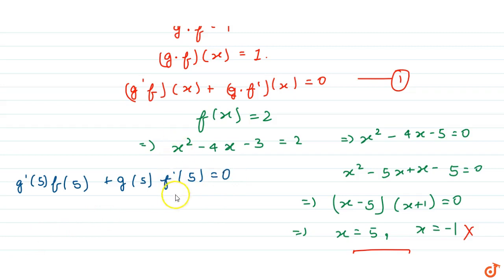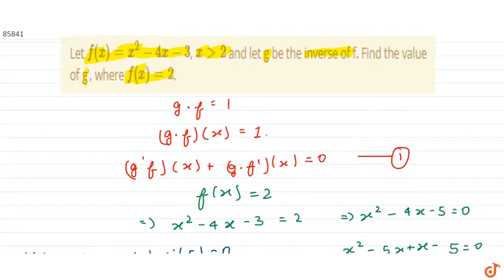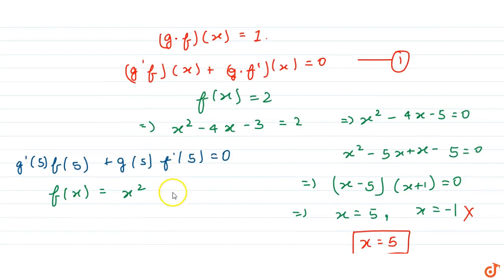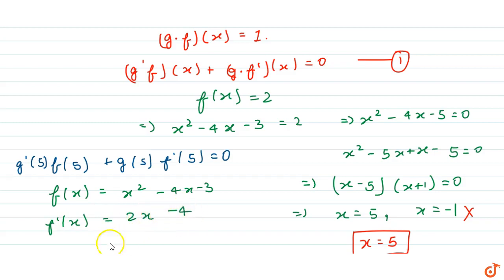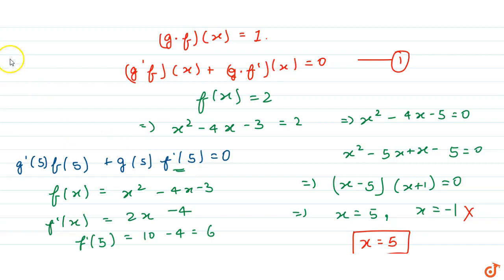Now we find the value of f' of 5. Since f of x equals x squared minus 4x minus 3, we get f' of x equals 2x minus 4. Therefore f' of 5 equals 10 minus 4, which is 6.